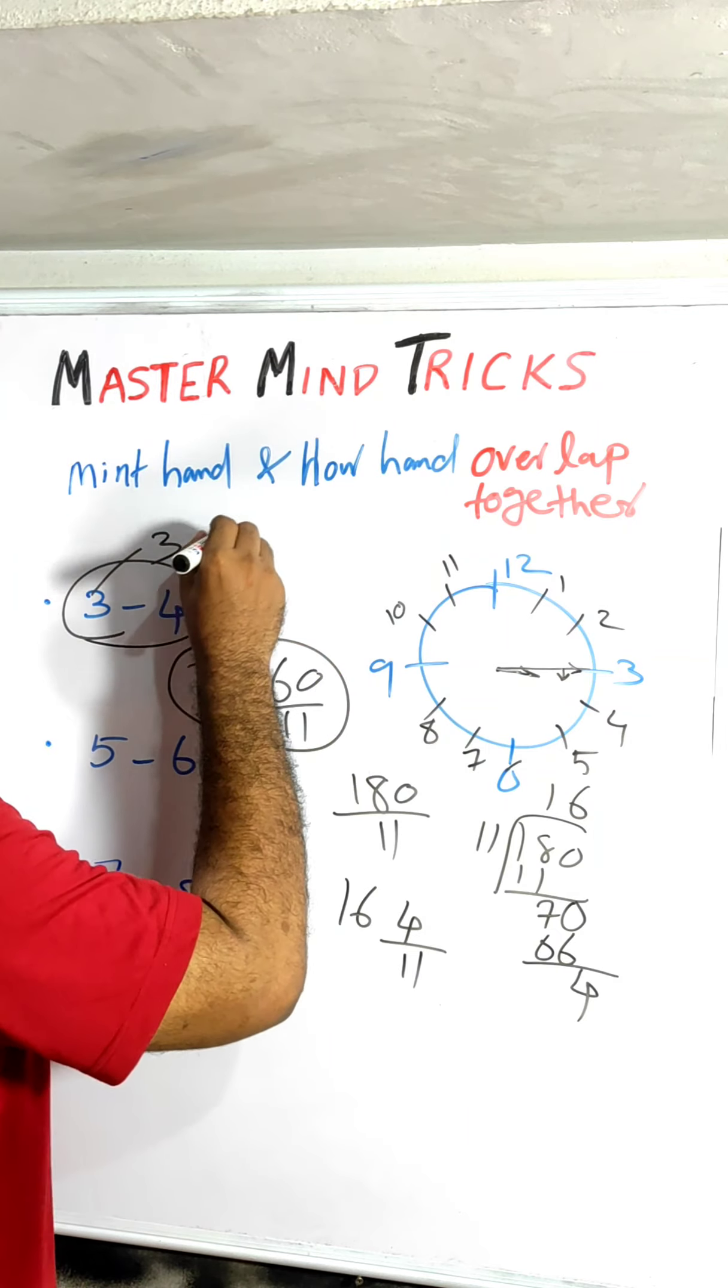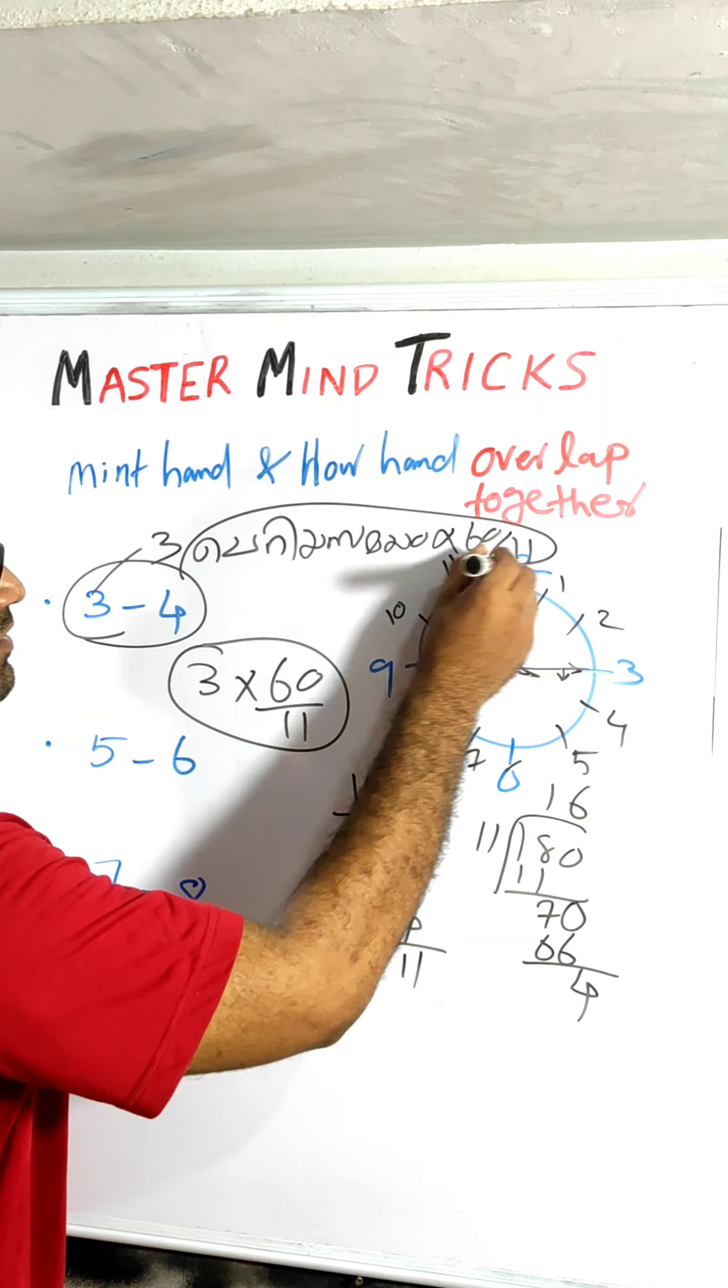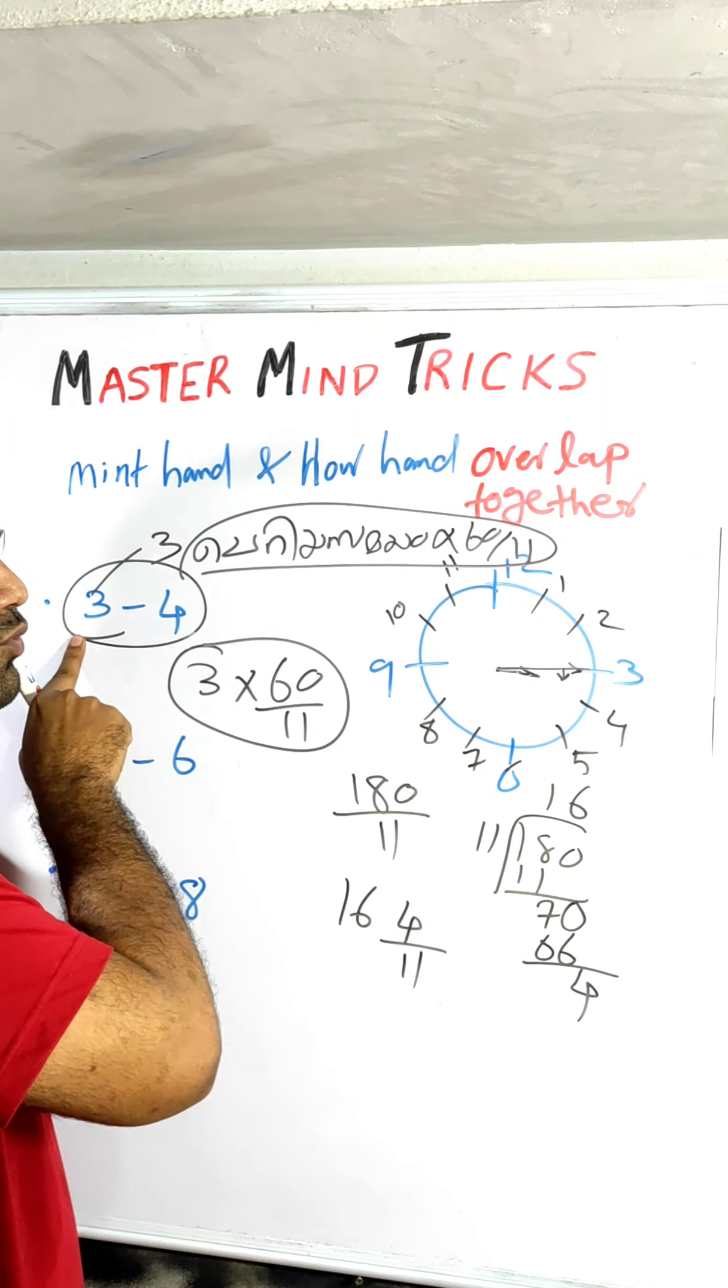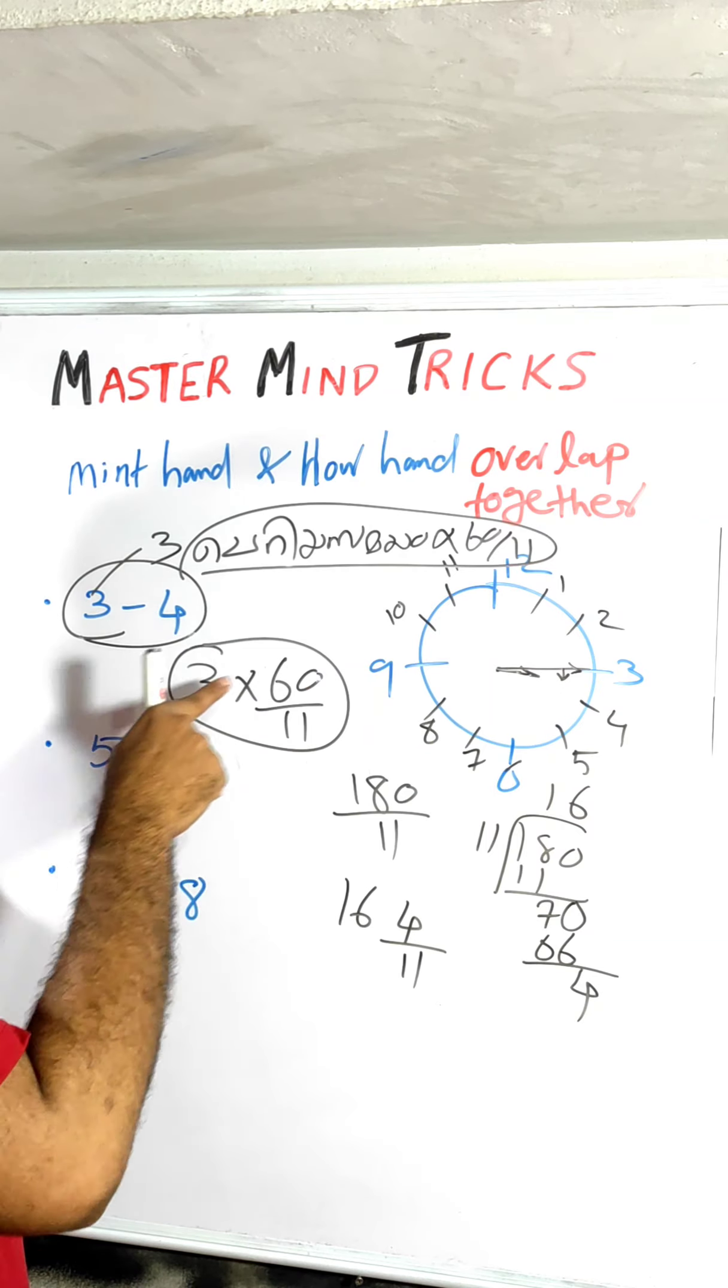What is the shortcut? Take the difference, multiply it into 60 by 11. After 3, 4, 40 minutes, it will be 60 by 11. After 5, 3, 4, 5, 60 by 11.